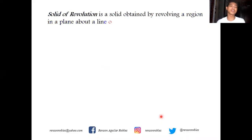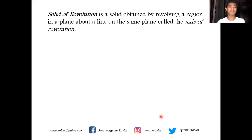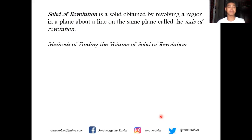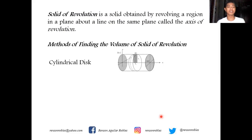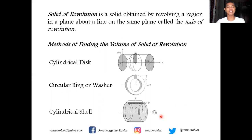By definition, a solid of revolution is a solid obtained when the region bounded by different curves is revolved about a certain axis of revolution. There are three methods in finding the volume of a solid of revolution: the cylindrical disk method, the circular ring or washer method, and the cylindrical shell method. The method depends on the relationship of the rectangular element and the axis of revolution.